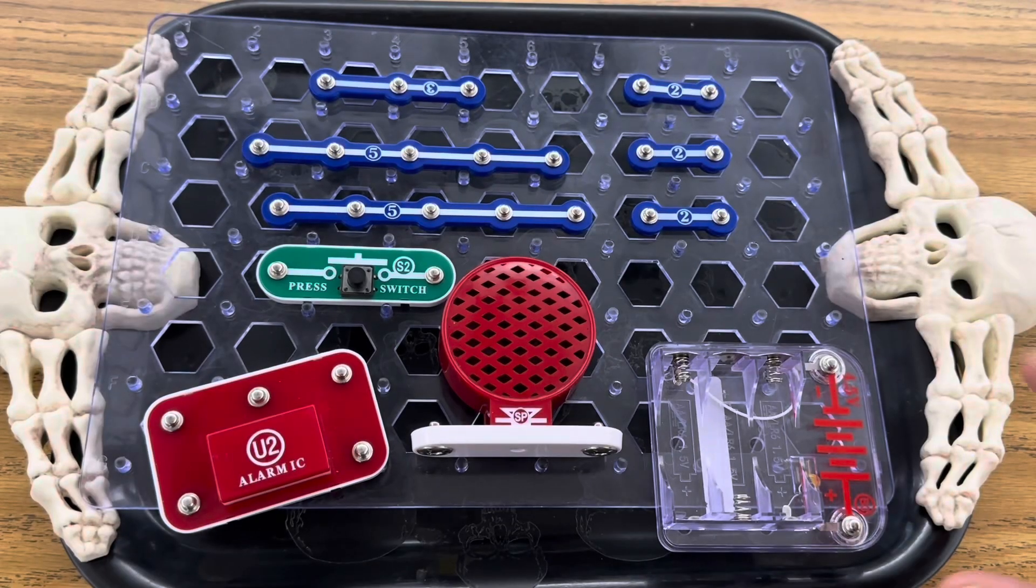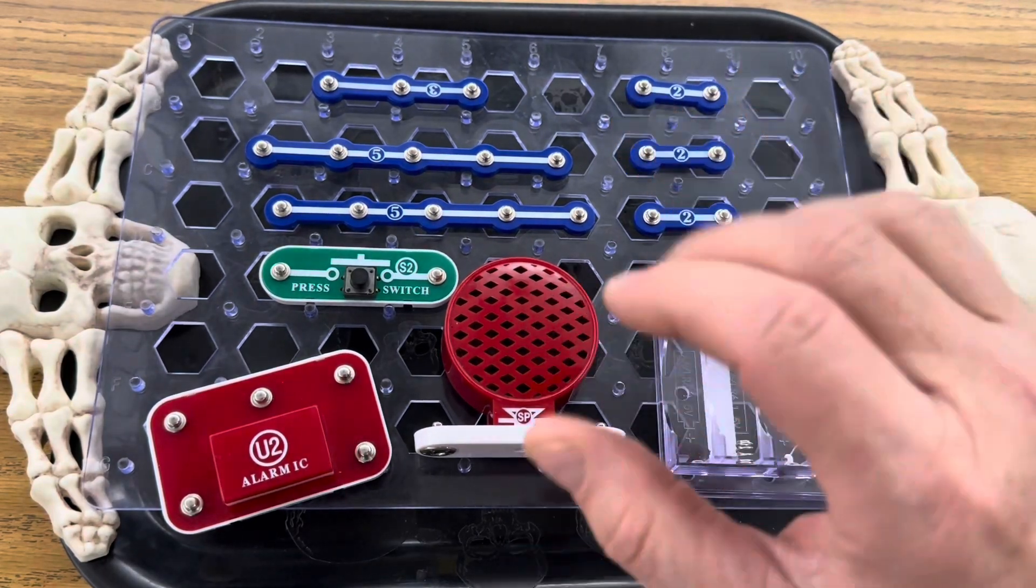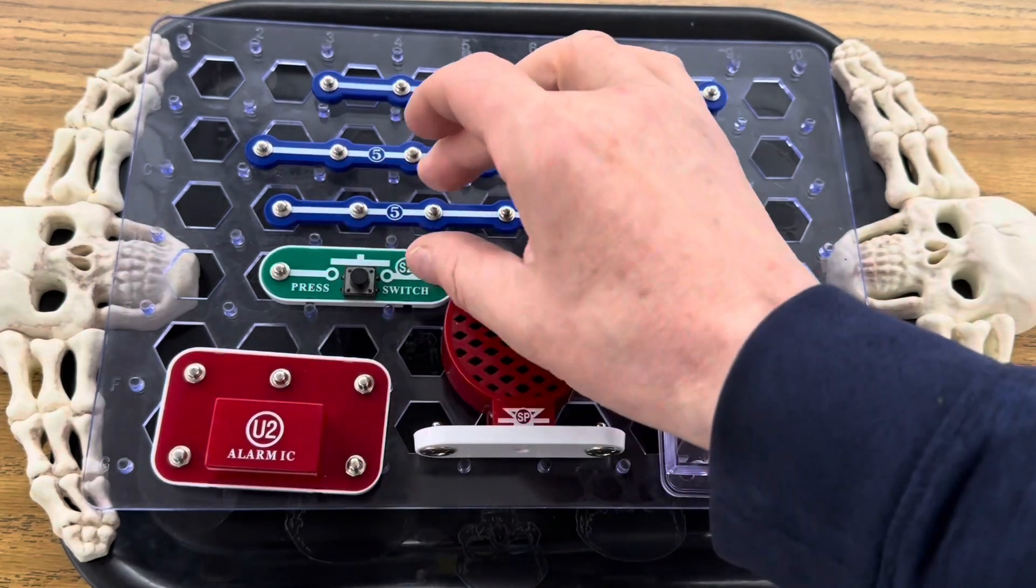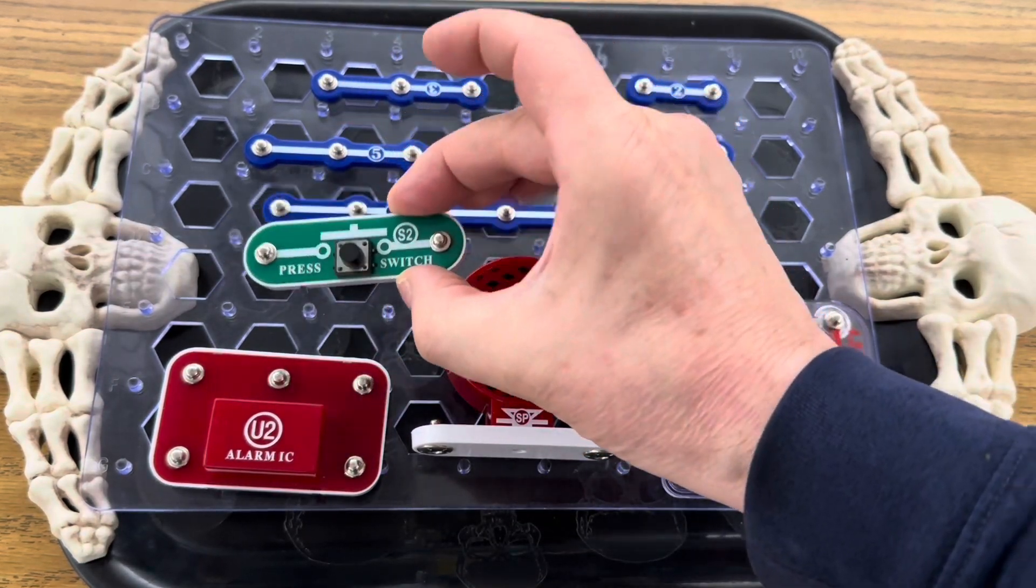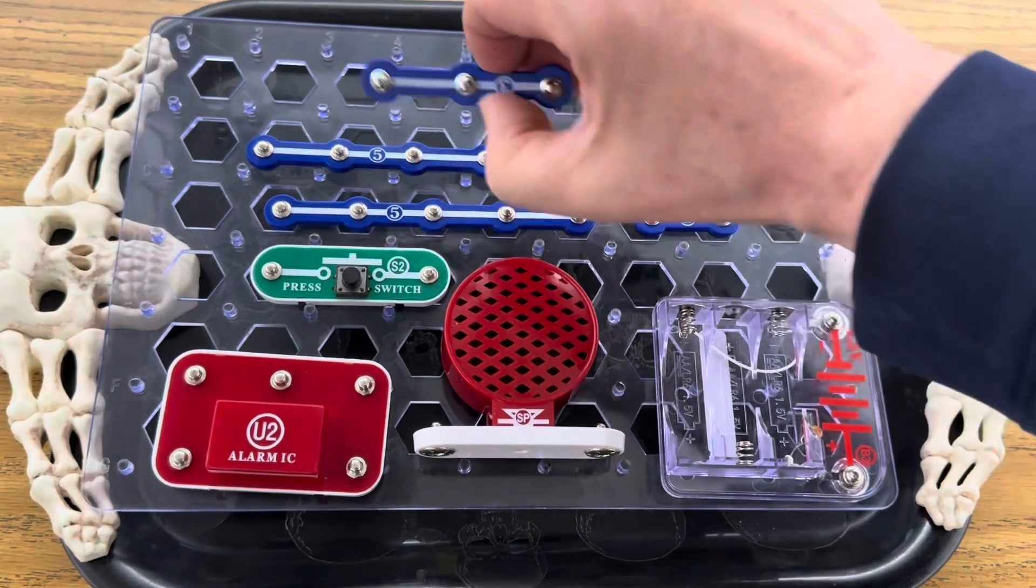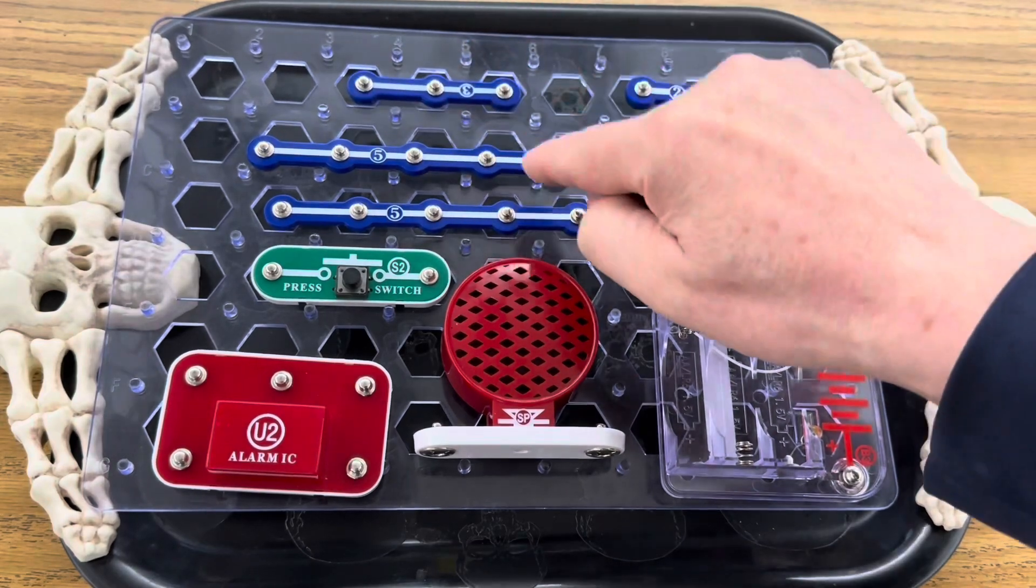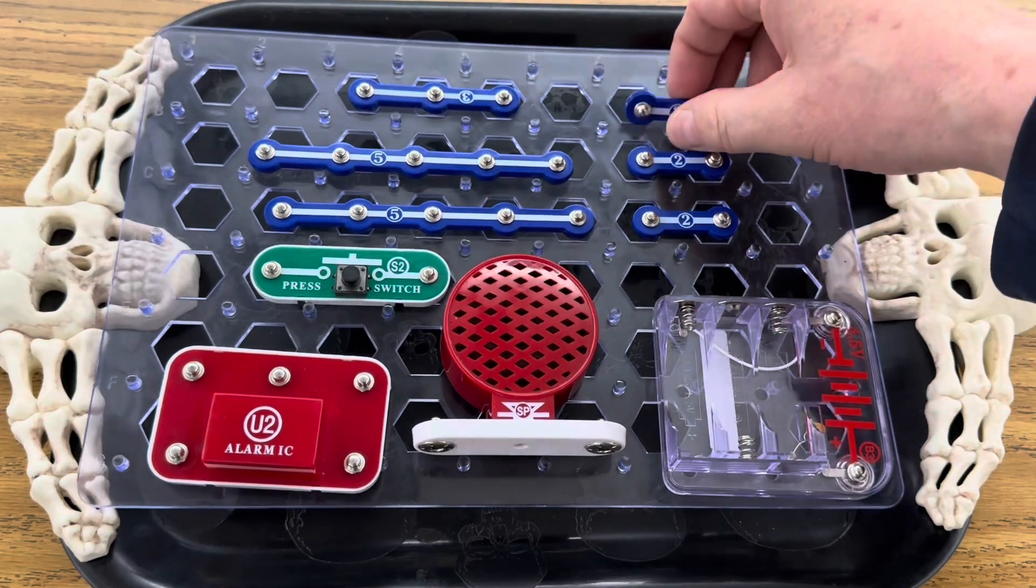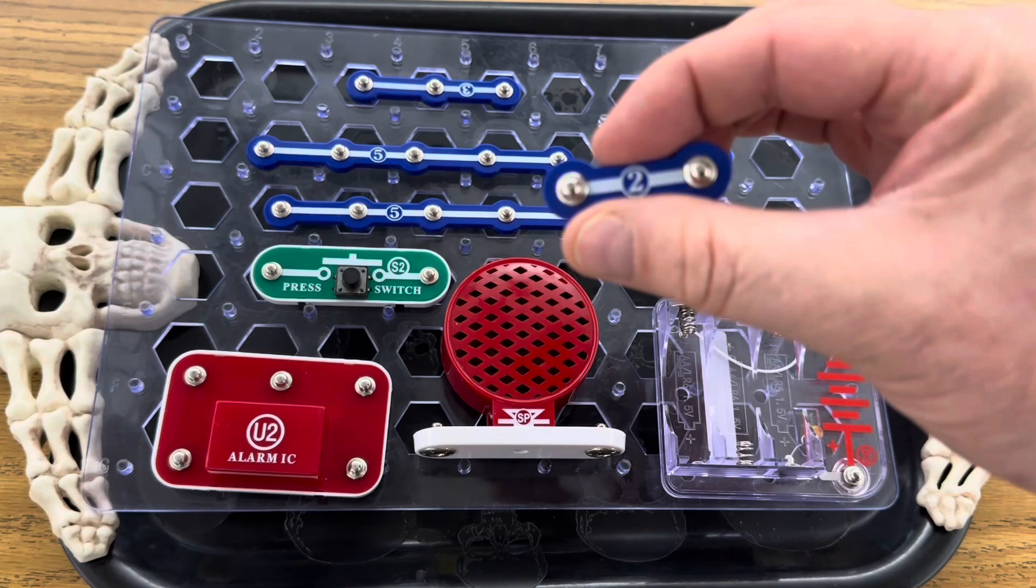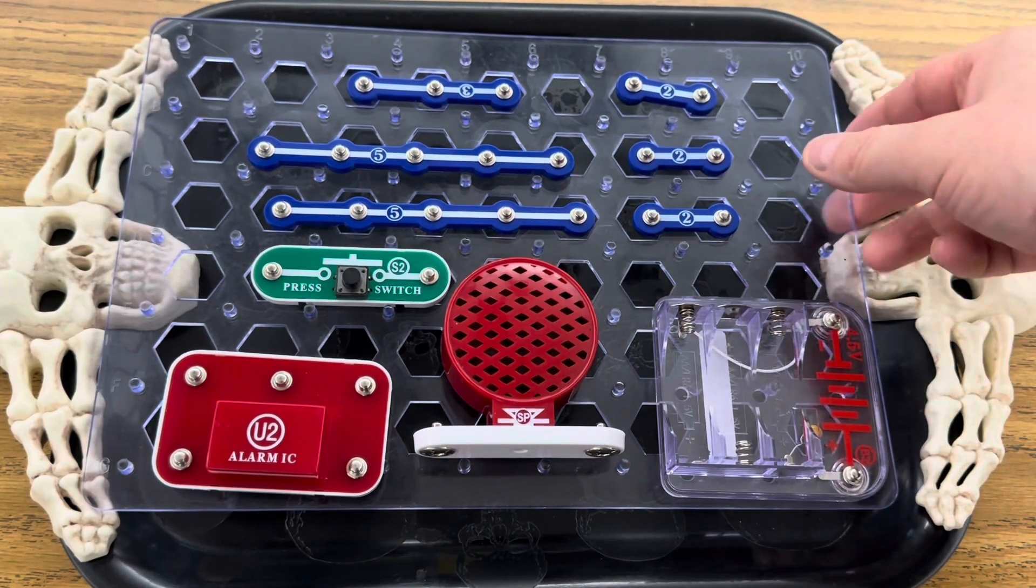For this project you need your battery jacket, the speaker, your alarm, your on and off press switch, one three snap wire, two five snap wires, three of the two snap wires, and your circuit board grid.